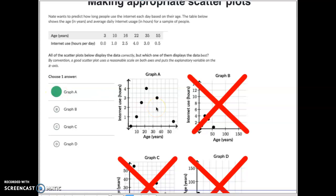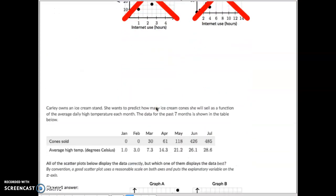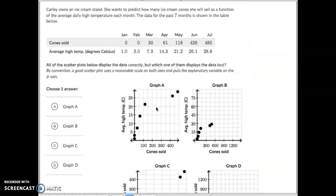Let's do one more here just to make sure we've got this down pat. Carly owns an ice cream stand. Now this makes sense. She wants to predict how many ice cream cones she will sell as a function of the average daily high temperature. That makes sense.